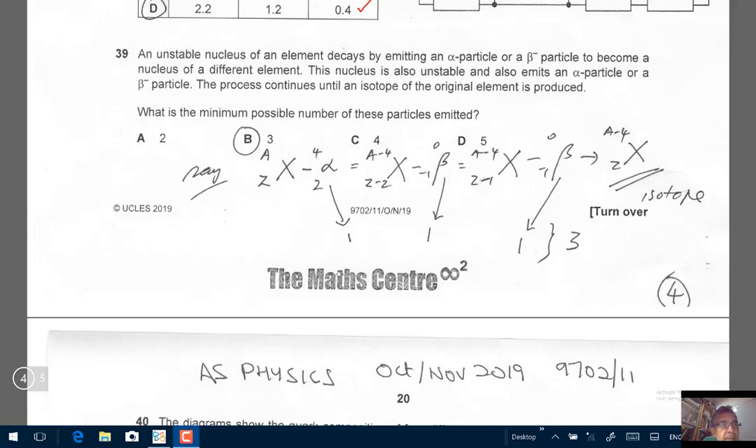Hi, welcome to themathscenter.com. In this video, we are going to look at question number 39 that appeared on the multiple choice test in the AS Physics exam. Session October-November 2019, paper 11, subject code 9702.